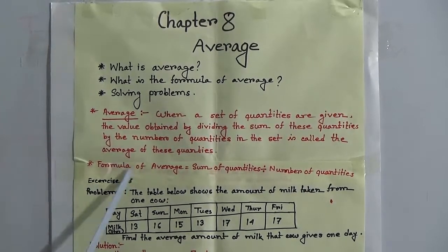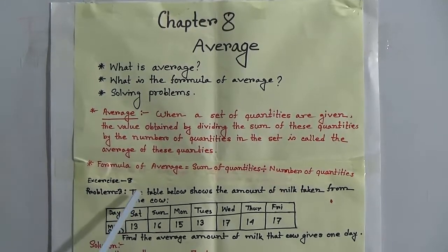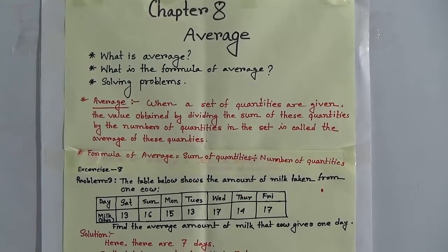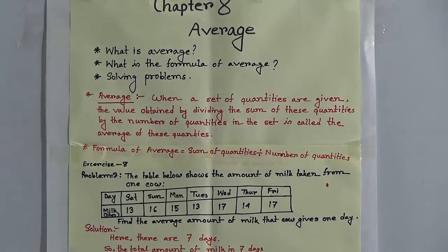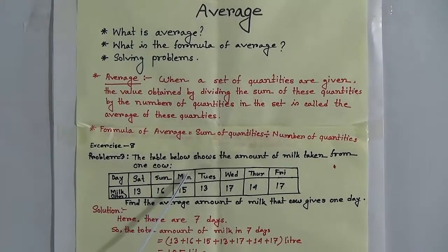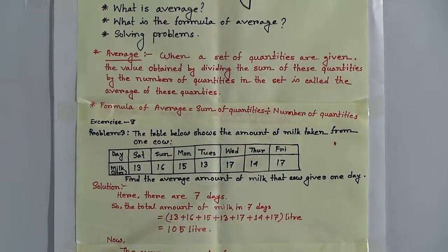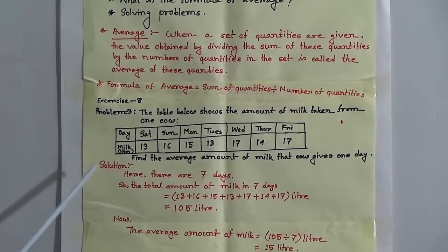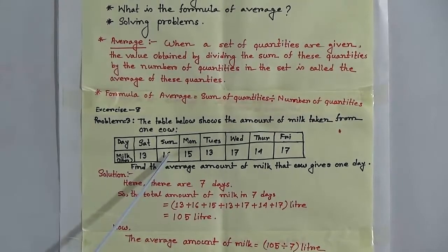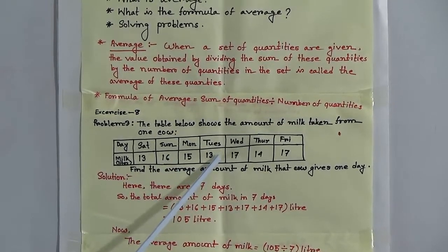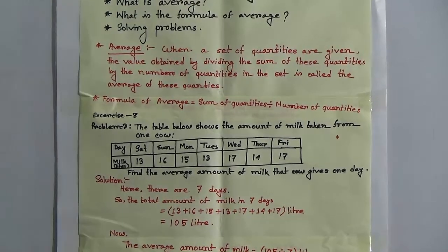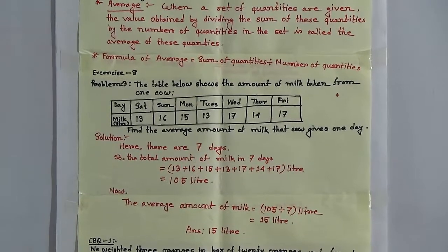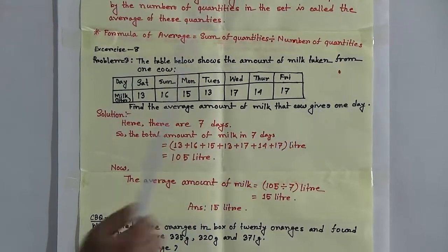Now exercise 8, problem 3. The table below shows the amount of milk taken from one cow. The days are Saturday, Sunday, Monday, Tuesday, Wednesday, Thursday, and Friday. The milk measured in litres are 13, 16, 15, 13, 17, 14, and 17 litres. Find the average amount of milk that the cow gives per day.